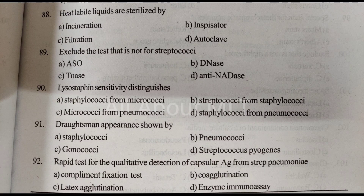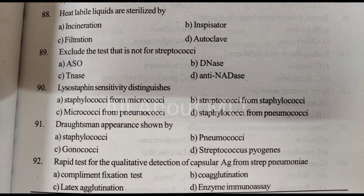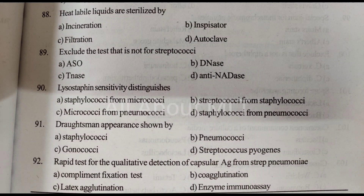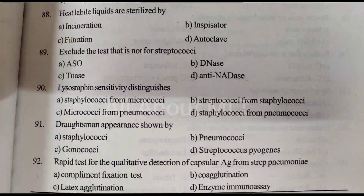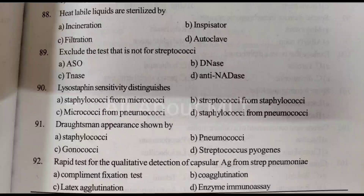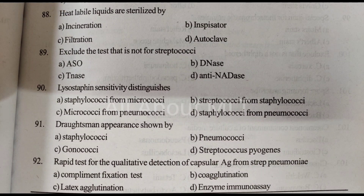Dropped man appearance shown by. Option A: Staphylococci. Option B: Pneumococci. Option C: Gonococci. Option D: Streptococcus pyogenes. Answer is Option B: Pneumococci.